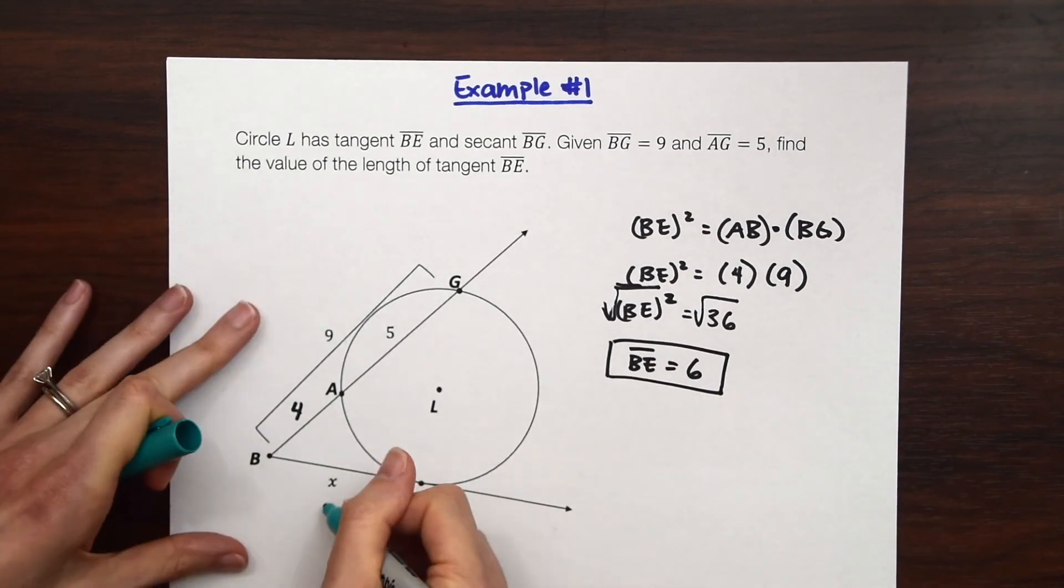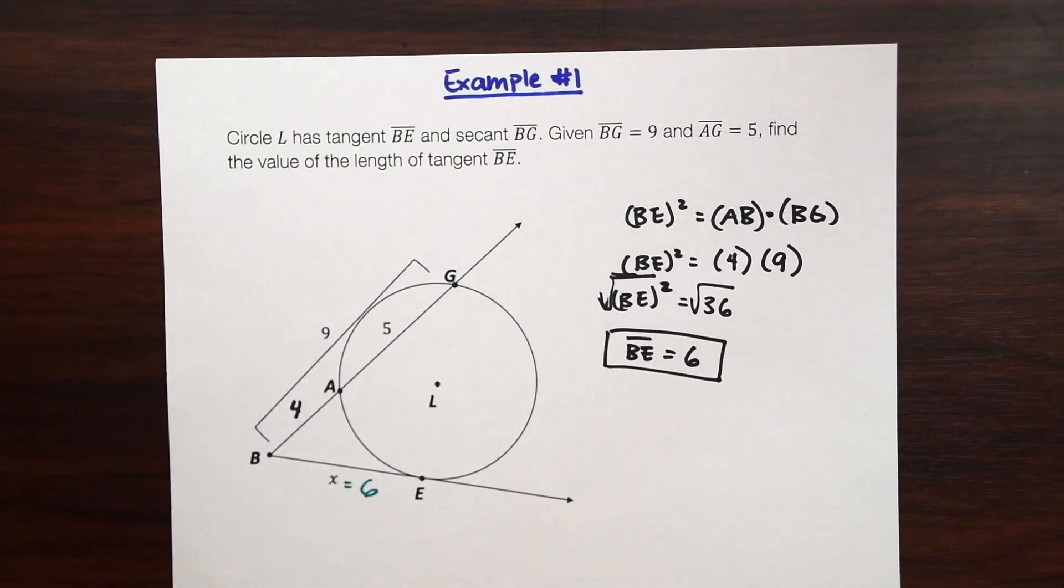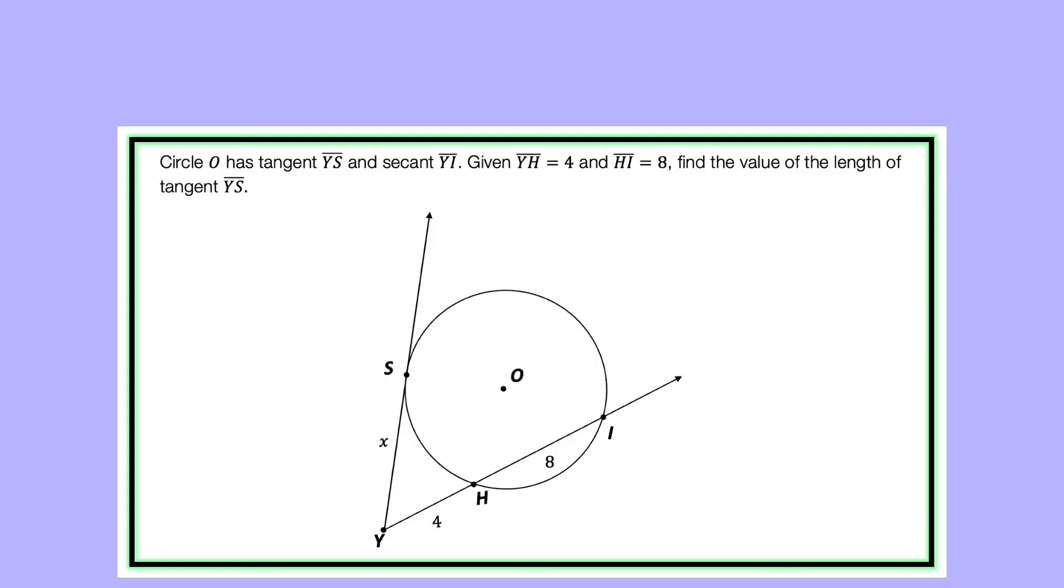So we can fill that in over here. X or BE is equal to 6. So super easy formula as long as you remember this theorem you shouldn't have any problems finding the missing length. So let's try another example.